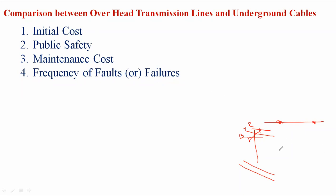In the rainy season, due to high wind pressure, conductors clash with each other, causing sparks and rough surfaces on conductors. All these problems arise only in overhead transmission lines and are not present in underground cables, where the frequency of faults is very low.